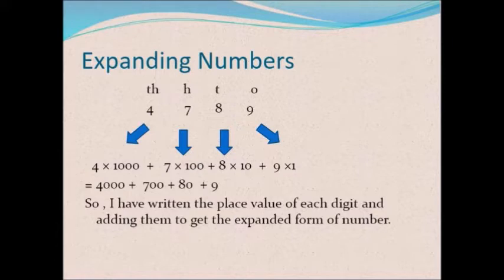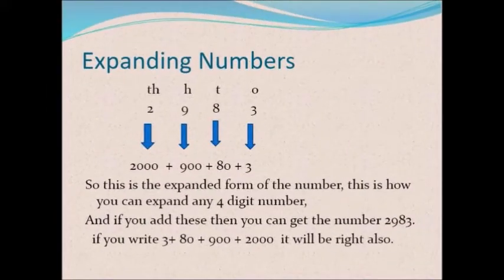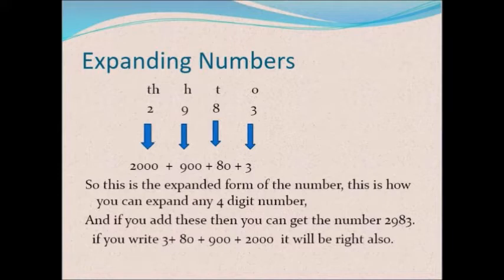Now I'm giving you another example. This is also a four-digit number: 2983. We can do this directly. Two is at the thousands position, so 2 × 1000 = 2000. Nine is at the hundreds position, so 9 × 100 = 900. Eight is at the tens position, so 8 × 10 = 80. Three is at the ones position, so 3 × 1 = 3. So the expanded form is 2000 + 900 + 80 + 3.